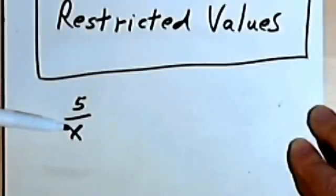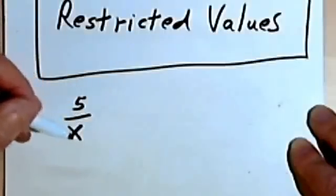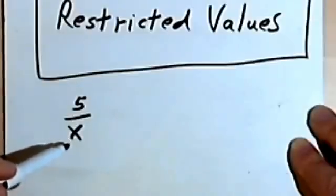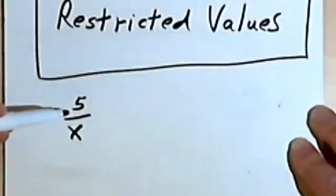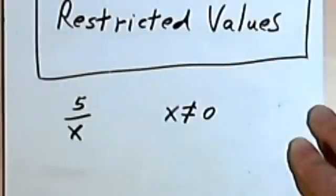So 5 over x is a rational expression. Now a restricted value is a value that x could not have. And the reason x cannot have some values is you remember one of the basic rules about fractions is you can't have a zero as the denominator, because you can't divide by zero in math. So looking at this, 5 over x, what we know is that x could be any number except for zero, because if x equals zero, then this would not be a valid fraction. So we can just write x does not equal zero. So zero is a restricted value for x.